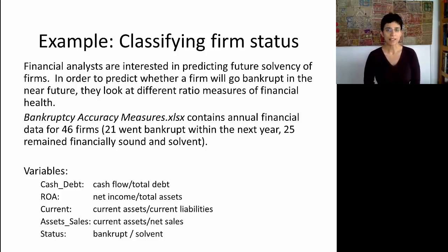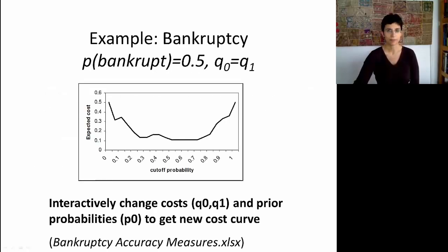Let's look at an example. Financial analysts are interested in predicting future solvency of firms. In order to predict whether a firm will go bankrupt in the near future, they look at different ratio measures of financial health. You can see down here several such financial measures. The Excel file, bankruptcy accuracy measures, contains annual financial data for 46 firms. 21 of these firms went bankrupt within the next year, and the remaining 25 remained financially sound and solvent. So we have a small sample, but let me use this example to show you what happens with distortions. Note that the last variable down here is the output variable of interest. It's the label bankrupt or solvent.